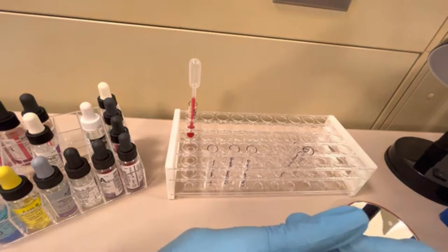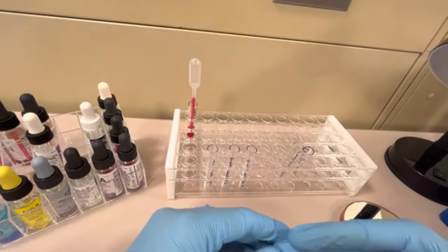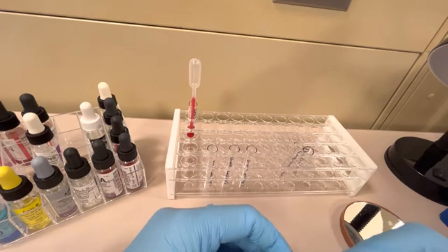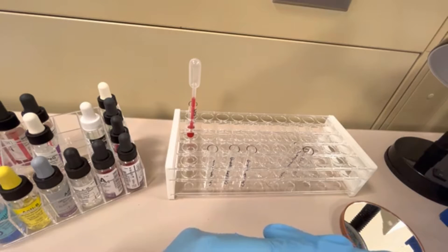Cord blood contains Wharton's jelly, which is kind of this gelatinous substance that is present in the cord blood that helps to insulate and protect umbilical blood vessels. That Wharton's jelly can actually interfere with blood bank testing. So we have to wash these red cells.